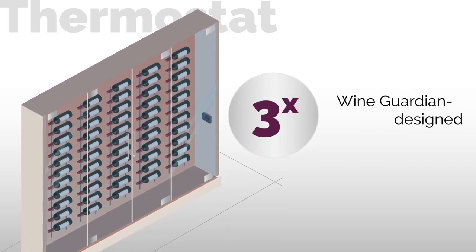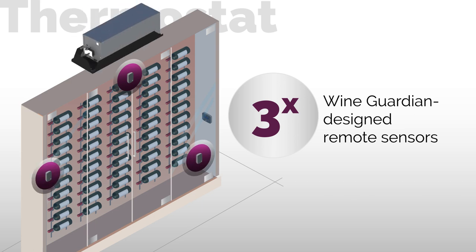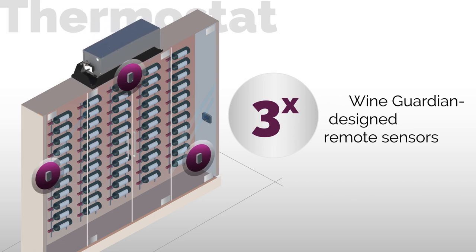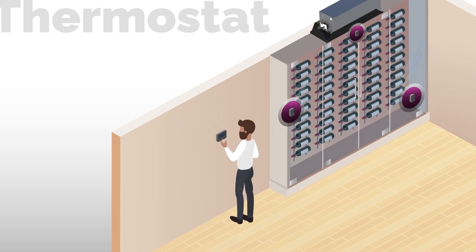That's why up to three WineGuardian-designed remote sensors can be placed at the top, bottom, midpoint, or at the return grill of your wine wall to maximize system accuracy. When these remote sensors are used, the thermostat can even be placed outside the wine wall for convenient access.